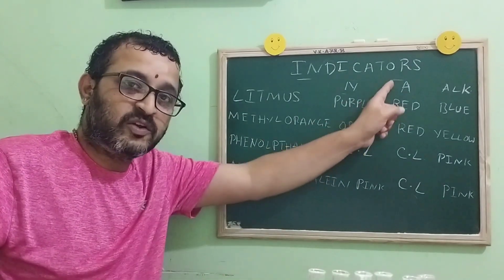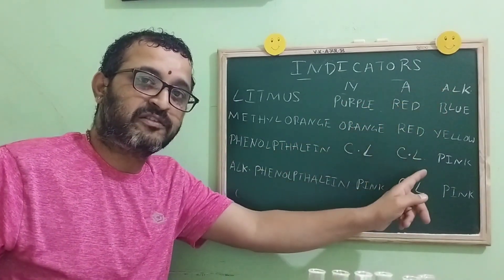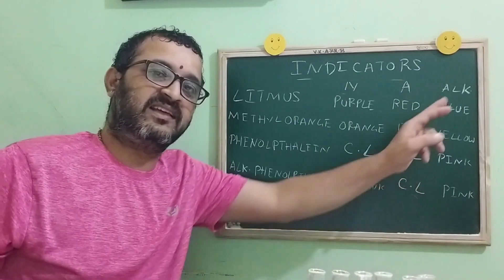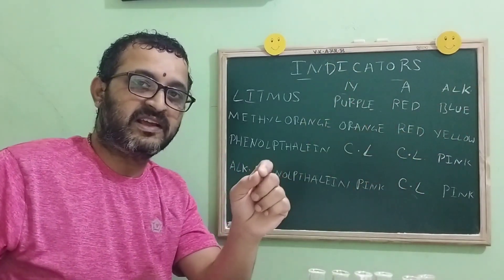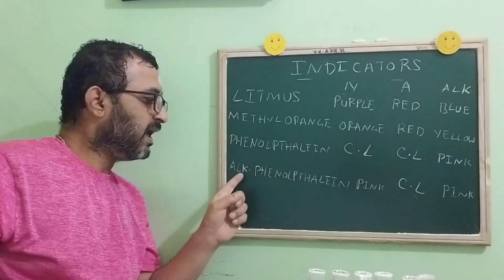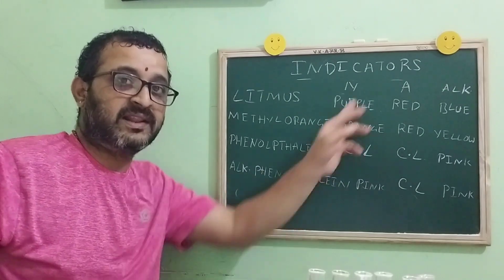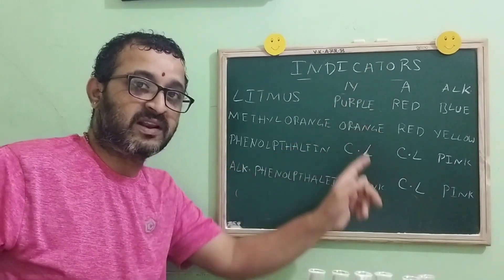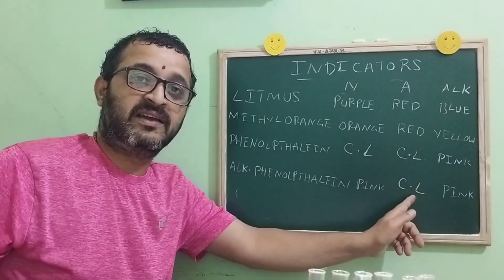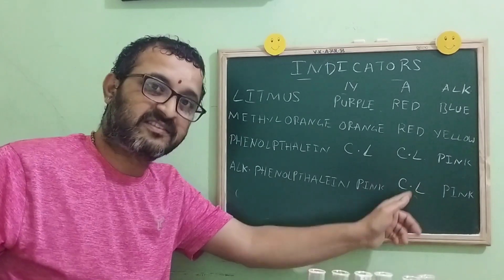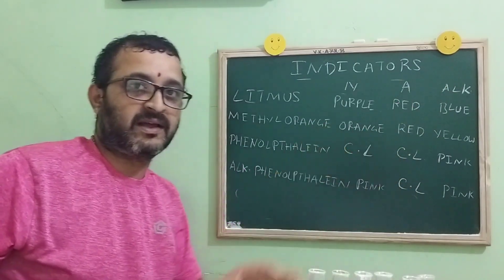Phenolphthalein: in neutral, it is colorless. In acid medium also, it is colorless. And in alkaline medium, it is pink. Alkaline phenolphthalein: in neutral, it is pink. In acid medium, it is colorless. And in alkaline medium, it remains pink.